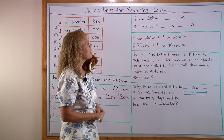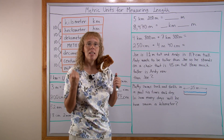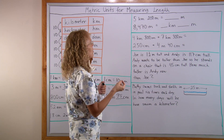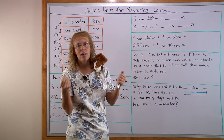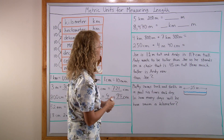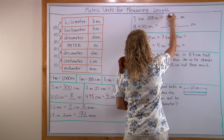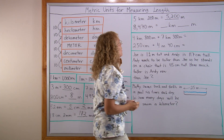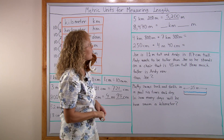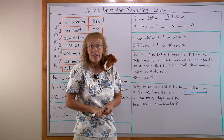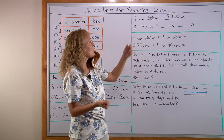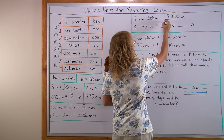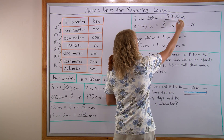5 kilometers 200 meters — remembering that kilo means thousand, 5 kilometers will be 5,000 meters plus 200 meters, which is 5,200 meters. And 8,470 meters: 8,000 of those will make 8 kilometers, and the rest — 470 meters — is left over, so it's 8 kilometers and 470 meters.